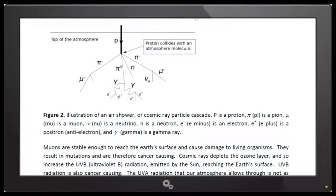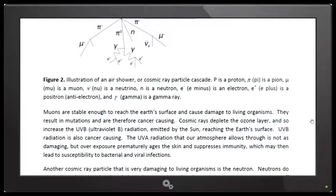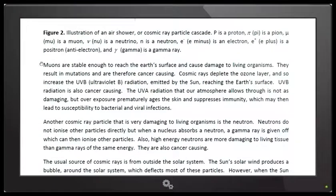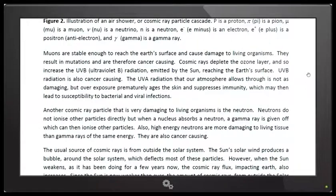Now ladies and gentlemen, she's getting very highly scientific with her explanation but this is exactly what physicists do and this is what they are trained and educated to do. It further states that muons are stable enough to reach the earth's surface and cause damage to living organisms. They result in mutations and are therefore cancer causing. Cosmic rays deplete the ozone layer and so increase the UVB ultraviolet B radiation emitted by the sun reaching the earth's surface.